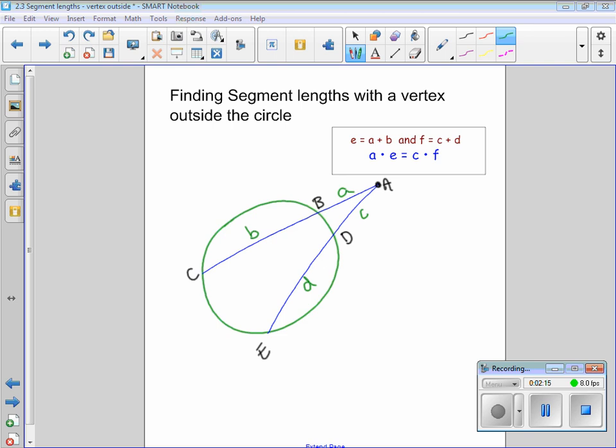To help us get there, what I want you to know is that e represents the entire length from A to C. I would simply say e is a plus b. And the same thing happens with f down below. f represents the two pieces added together or the whole thing. So up in the box I have these pieces: e equals a plus b the whole thing, and f equals c plus d the whole thing.